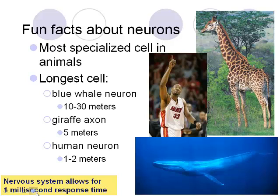Some fun facts: the longest neuron in an animal is 10 to 30 meters long. Giraffes have neurons of about 5 meters, and humans can be anywhere from 1 to 2 meters. The amount of time it takes for the nervous system to respond to a stimulus is one millisecond — obviously very quick.